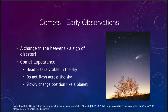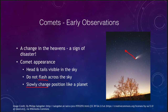A comet does not flash across the sky — it does not behave like a meteor or a shooting star. Comets slowly change position just like a planet, orbiting through the solar system. Over the course of a night it follows a specific path through the sky, but it will not flash through like a shooting star. If you see a comet one night, you can go back the next night and it will be in roughly the same position.